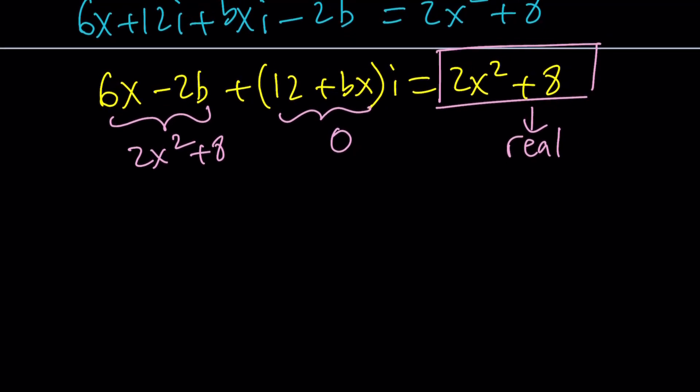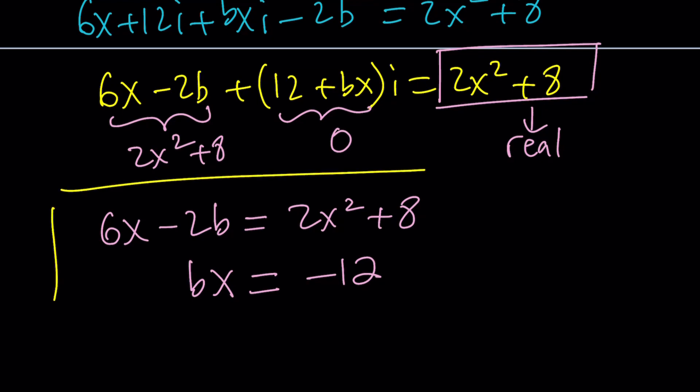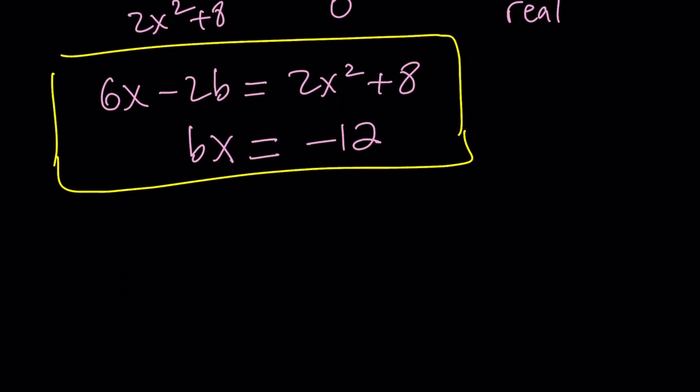Now from this we get a system of equations. Let's solve it. First we're going to set 6x minus 2b equal to 2x squared plus 8. And then the second equation gives us bx equals negative 12. How do we solve this system? Probably by using substitution, because elimination doesn't look good to me.